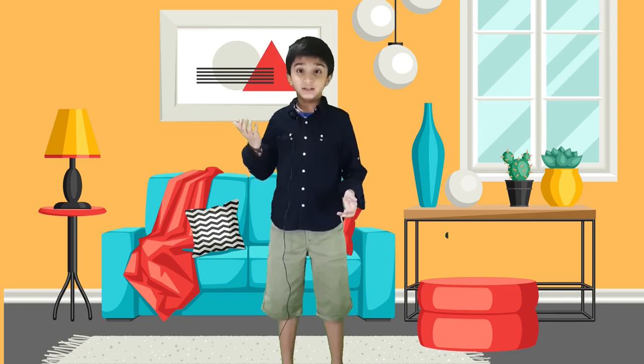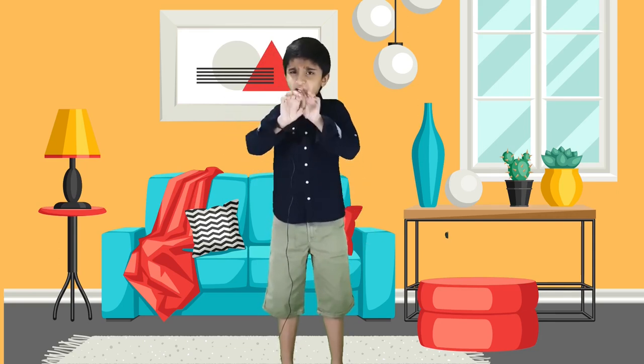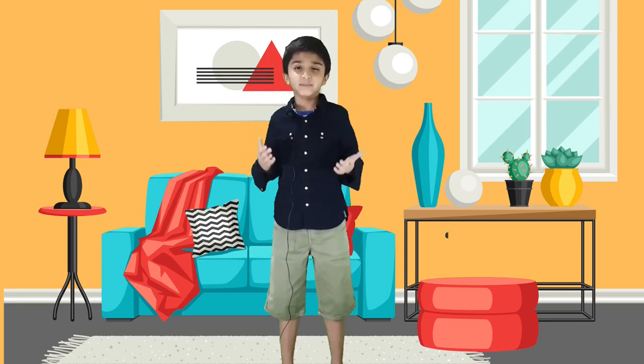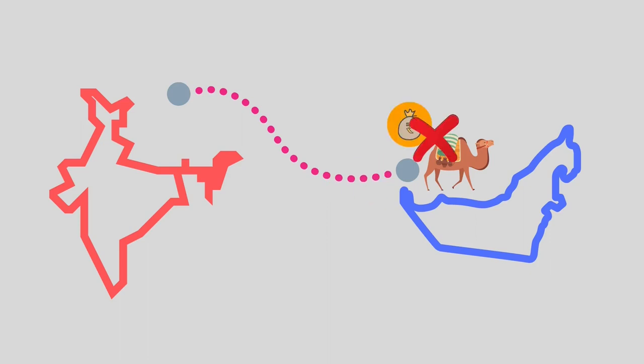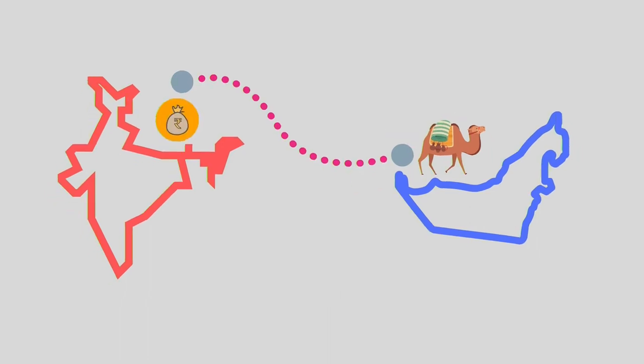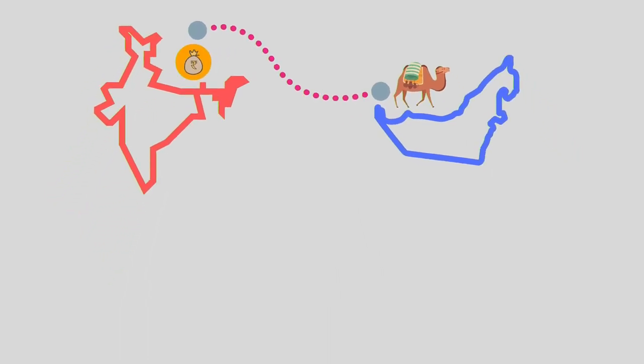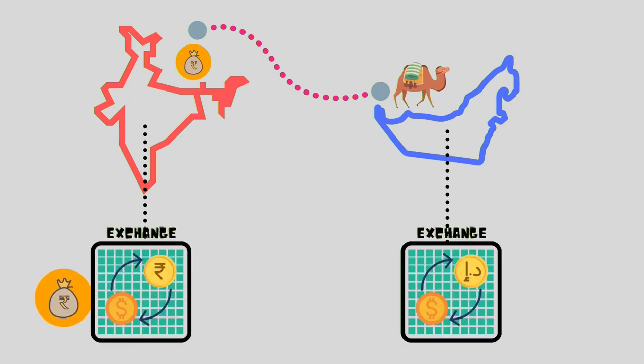Just like the barter system, we need a world currency which most countries will accept. The US dollar is one such common currency accepted by most countries. So when India wants to buy something from Dubai, it will not pay with rupees or dirhams but instead will use US dollars.